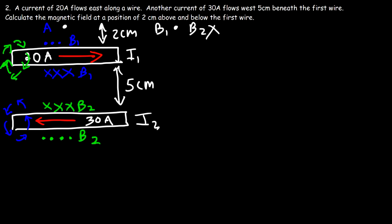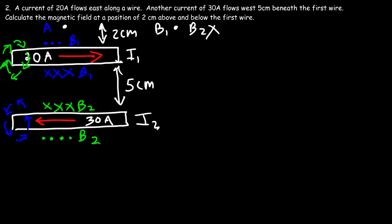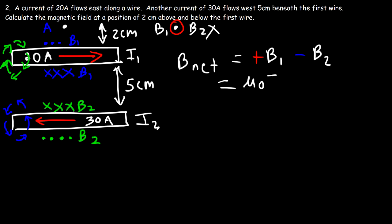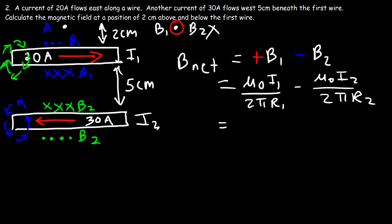The net magnetic field at point A is the sum B₁ − B₂, since they have opposite signs. B₁ = μ₀I₁ / 2πR₁ and B₂ = μ₀I₂ / 2πR₂. Factoring out μ₀ / 2π, the net field equals (μ₀ / 2π)(I₁/R₁ − I₂/R₂). Substituting: μ₀ = 4π × 10⁻⁷, I₁ = 20 A, R₁ = 0.02 m, I₂ = 30 A, and R₂ = 7 centimeters = 0.07 m (since point A is 2 cm above wire 1 and wire 2 is 5 cm below wire 1).